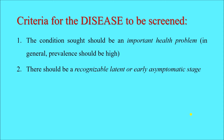There should be a recognizable latent or early asymptomatic stage. This is important because by screening we try to identify a disease in an apparently healthy person — someone who does not have any signs or symptoms. If the person already has symptoms, they would go for a diagnostic test to confirm the disease. So if a disease has a recognizable latent or early asymptomatic stage, only then can a screening test be applied.